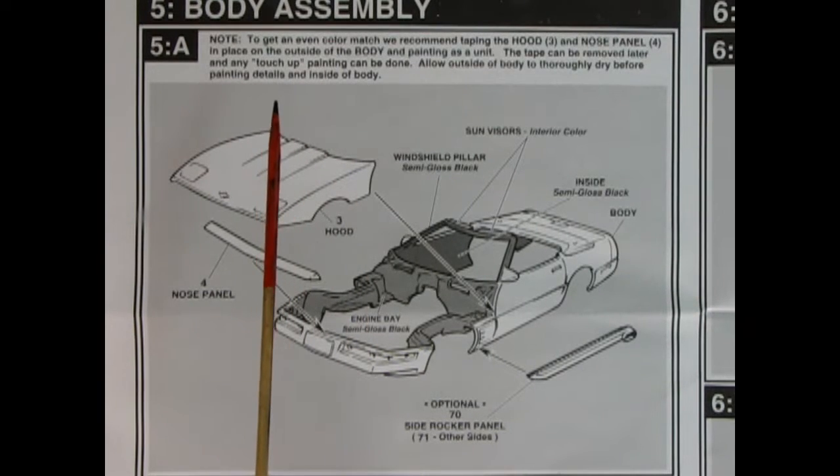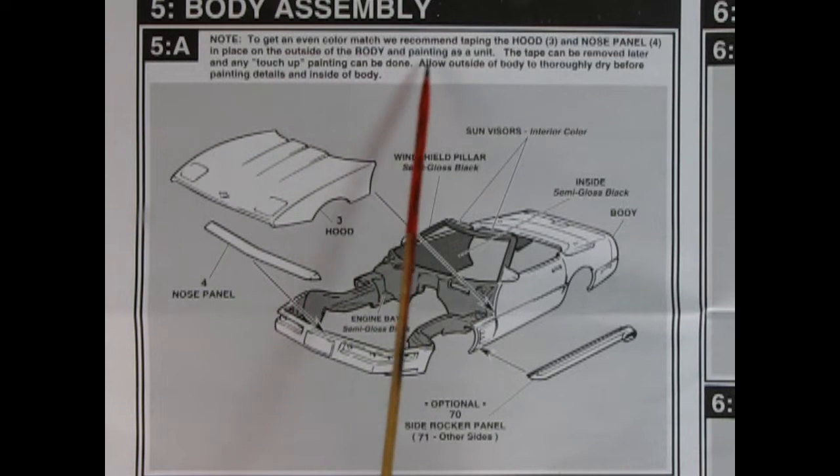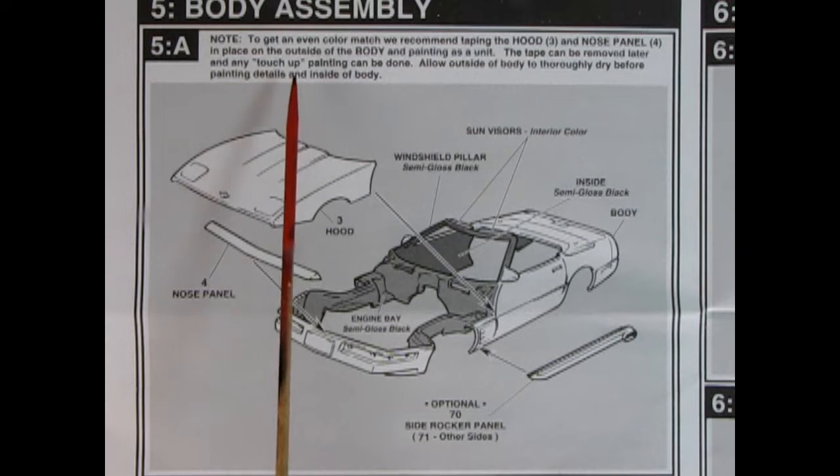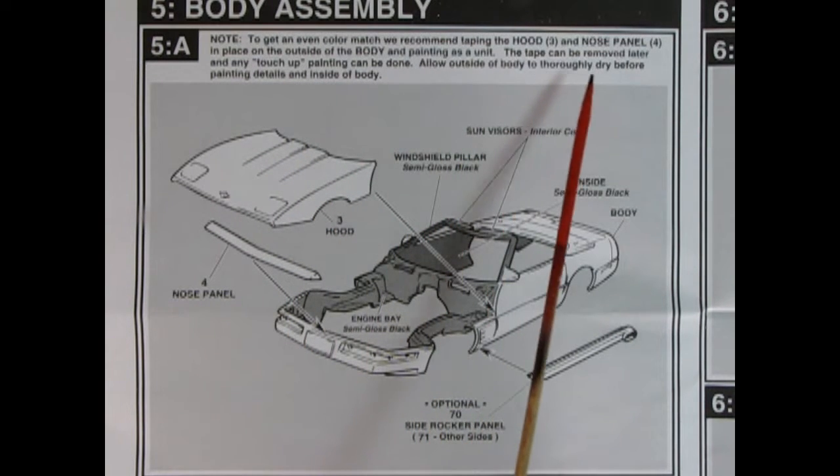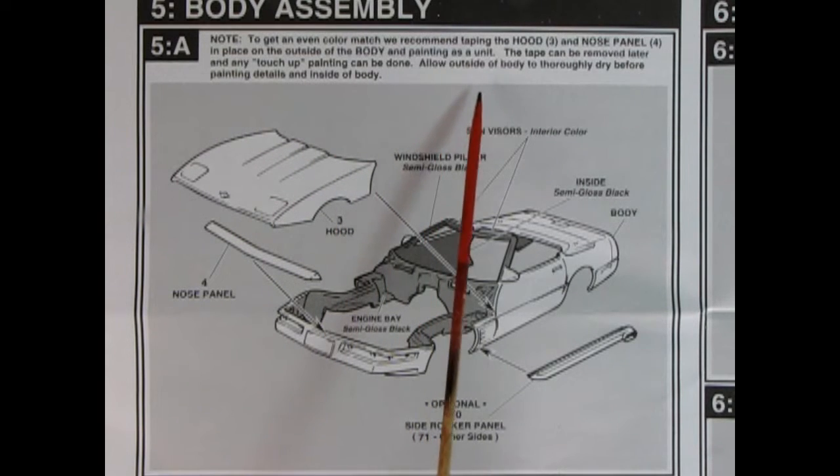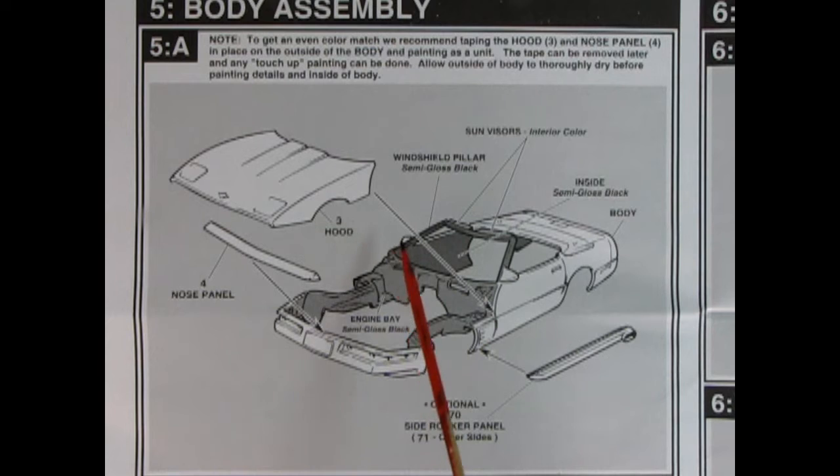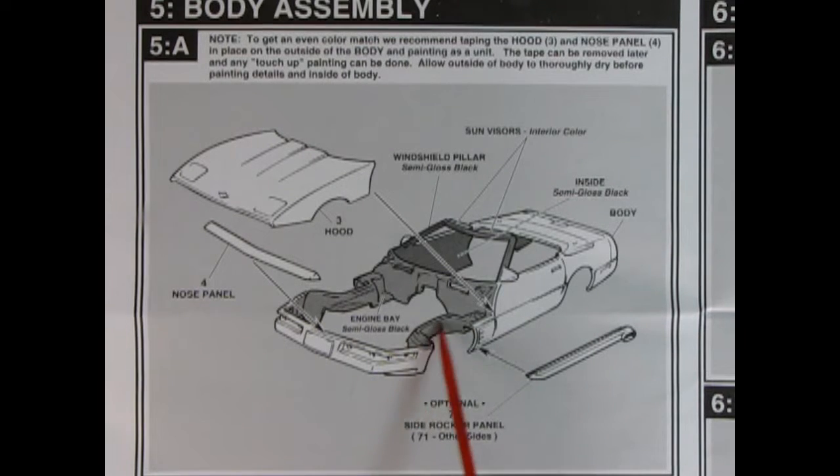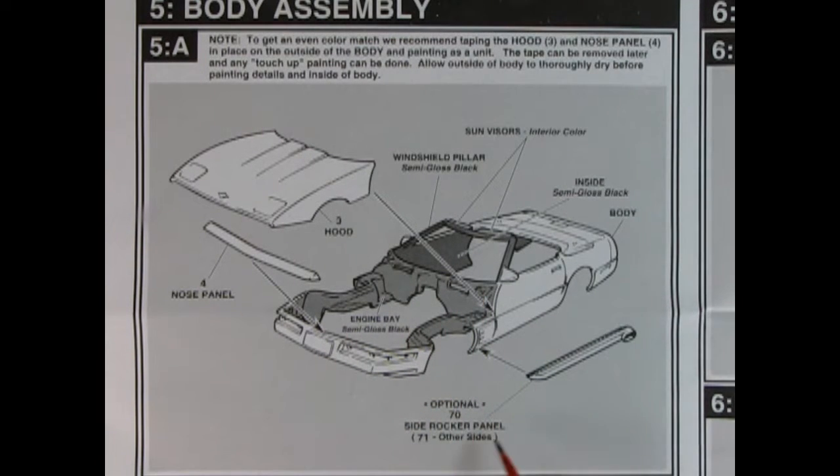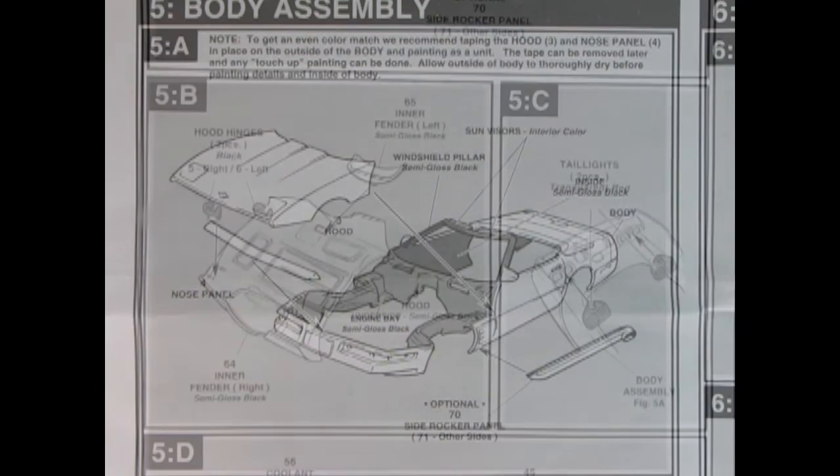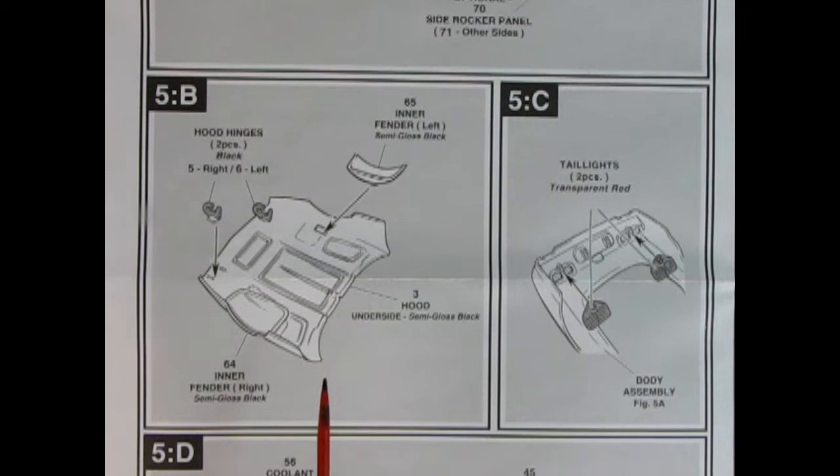In panel 5B, we get our body assembly. And it says, note, to get an even color match, we recommend taping the hood and nose panel in place on the outside of the body and painting as a unit. The tape can be removed later and any touch-up painting can be done. Allow outside of body to thoroughly dry before painting details and inside of body. That's a good idea. Nobody wants to grab wet paint, do they? I've done that once. A bad dog. Okay, so we've got our body here. And then we put our hood on and our nose panel. Tape it all in place, paint everything, pull off your hood nose panel and paint all this semi-gloss black in here. You have the option also of putting on these side rocker panels. Here's something about the hood, which was an industry secret up until now. But at any rate, you add on these inner fenders here and your hood hinges. The hood hinges allow you to open up the hood, in case you didn't know.